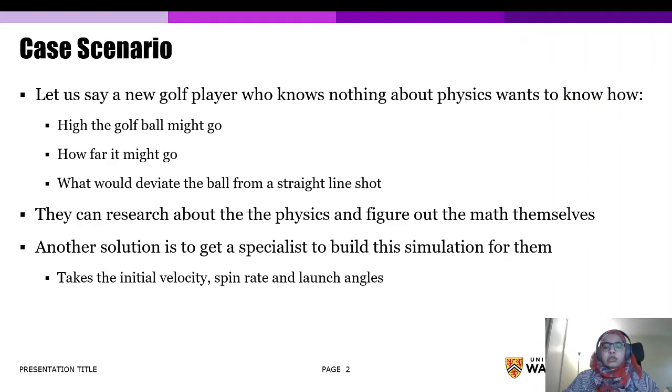One solution is that the person can actually go and figure out how to determine these factors, but this would be a waste of time since they know nothing about physics. Another solution is to get an expert to build a simulation for these players. This simulation will allow the users to input the initial velocity, initial spin rate, and launch angles. This is the problem that we decided to work on this term.